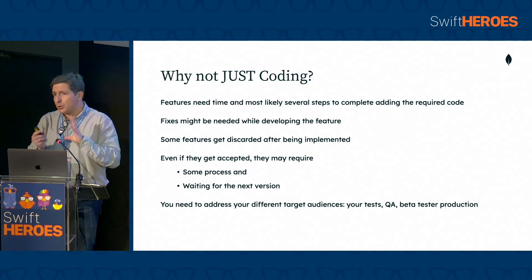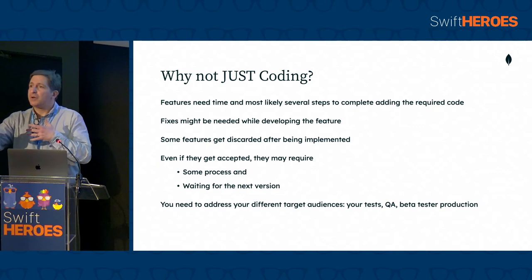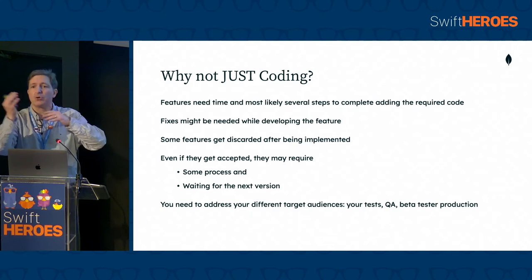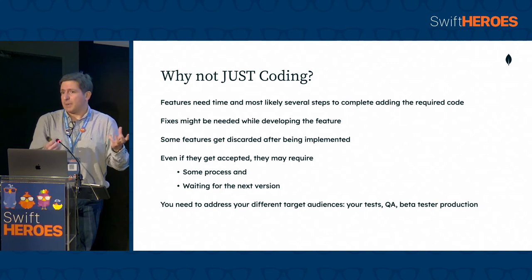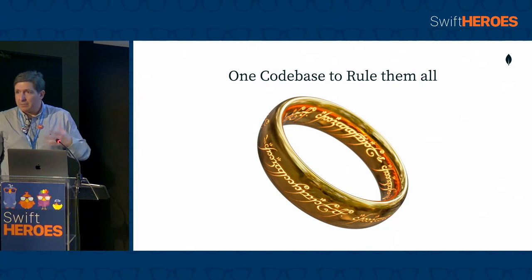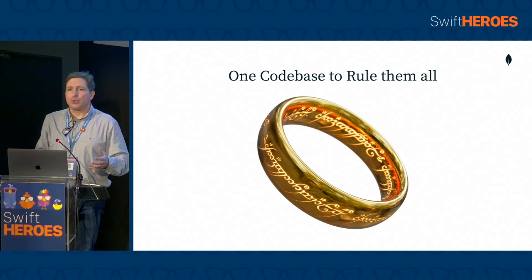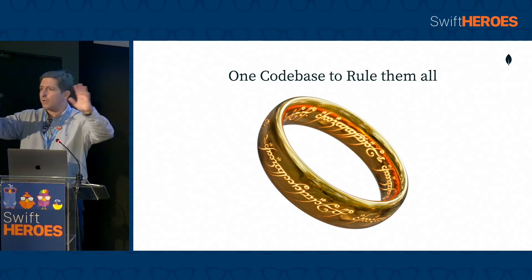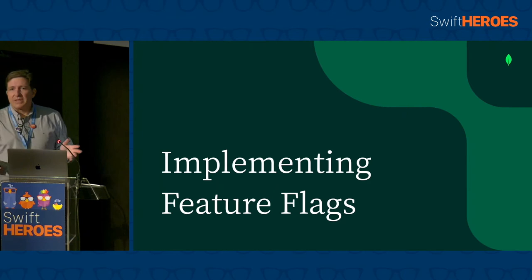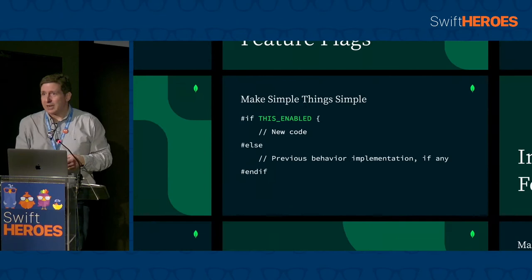Even if a feature gets accepted, you may have to go through some approval or release it for the next big version. You also want to address different targets for different audiences — if you're talking to QA you want to show them what's ready, but in the development build you want everything that is going on even if not fully completed. The goal is to have one single code base that, based on configuration, enables or disables features for each of your audiences.